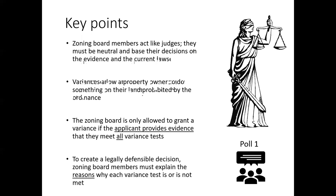The zoning board is only allowed to grant a variance if the applicant provides evidence that they meet all the variance tests. And last, in order to create legally defensible decisions, zoning board members have to explain the reasons why each variance test is met or is not met.